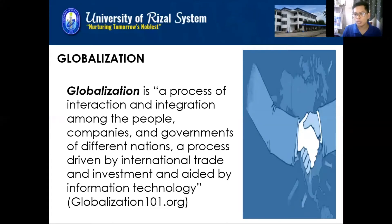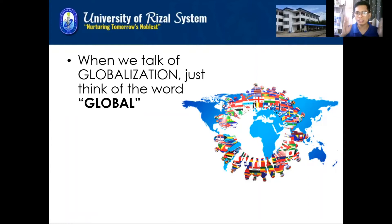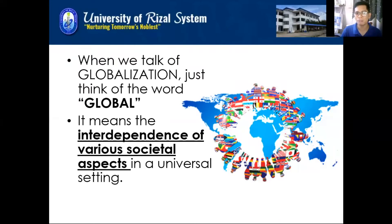When our government is transacting with other nations — through a tripartite agreement or other agreements with other countries — it's still an implication of globalization. For as long as there is international trading and investment aided by information technology, just like basically the Business Processing Outsource, it is an implication of globalization. Think of the word global, and think of information technology — how it connects and interrelates us when we're doing business or international trading. With that, it will be easier to understand the concept of globalization.